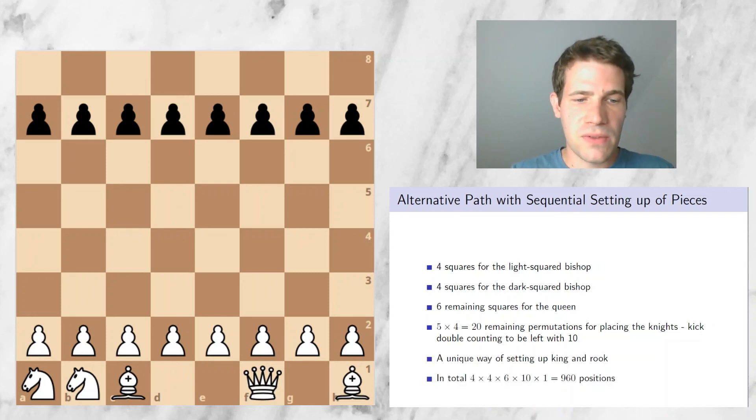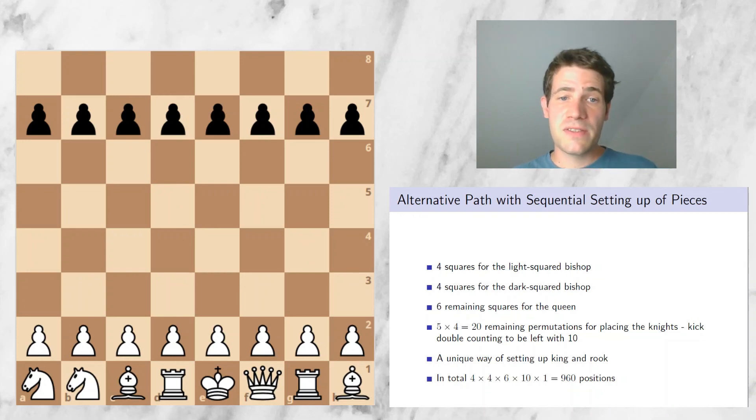And then there is a unique way of setting up king and the two rooks. In this case, the king has to be in the middle. Just three squares are left, so we are forced to set them up in this way. So now if we again multiply these numbers, we get 4×4 for the bishops, times 6 for the remaining squares of the queen, and then times 10 for different ways of arranging the knights. And finally, there is a unique way of arranging the king and the two rooks.